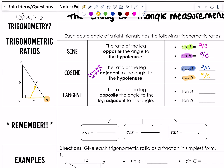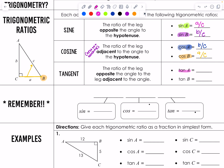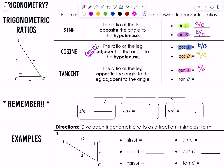Between sine and cosine, C is always going to be in the denominator. Last but not least, we have tangent. Tan of A: the rule is the ratio of the leg opposite the angle — opposite A — to the leg adjacent to the angle, which is B. So this is A over B. And tan B, same rule, different location: the ratio of the leg opposite over the adjacent, so B over A.